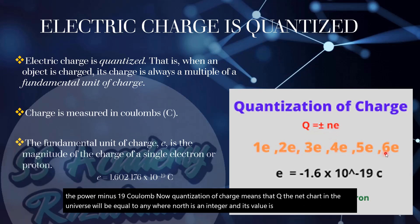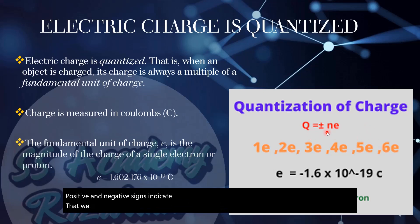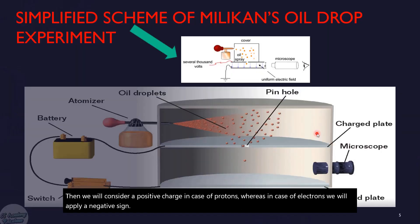The value of n is 1, 2, 3, 4, 5, 6, and so on. Positive and negative signs indicate that we consider a positive charge in the case of protons, whereas in the case of electrons we apply a negative sign.